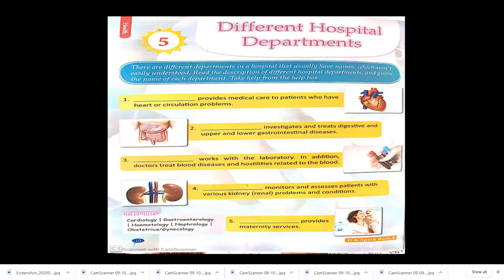There are also nephrologists, radiologists, and ophthalmologists. Since there are an enormous number of departments, it's very important for all of us to know which department to visit. The first department provides medical care to patients with heart or circulation problems — that is cardiology. The second investigates and treats digestive, upper, and lower gastrointestinal diseases — that is gastroenterology. You can see the spelling in the health box on screen.